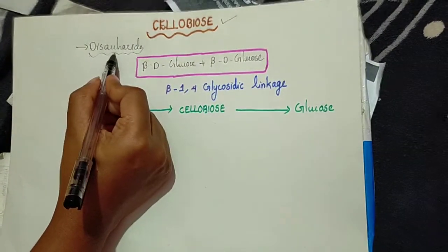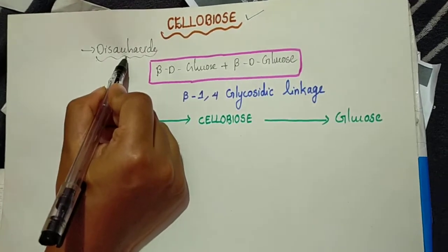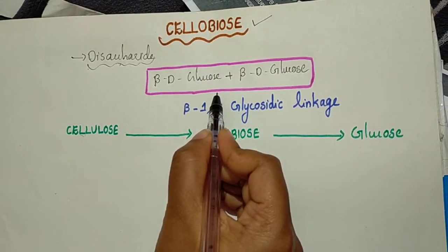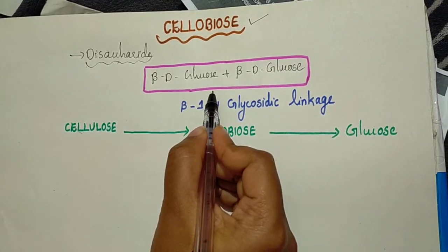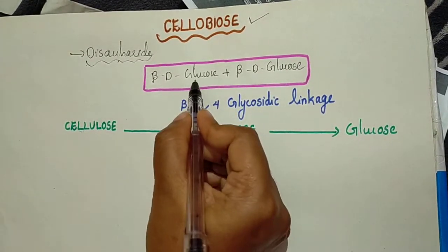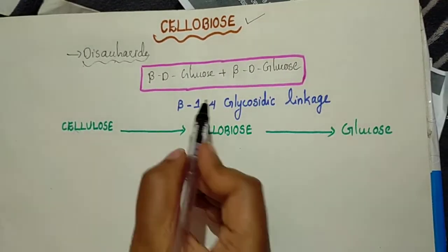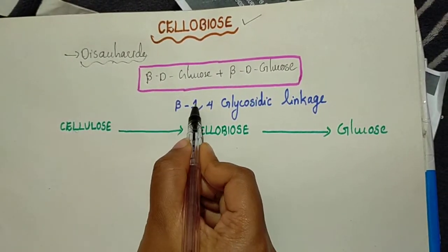Cellobiose is a disaccharide, since it is made up of two monosaccharides—a pair of beta-D-glucose. That is, two beta-D-glucose monosaccharides are linked together through beta-